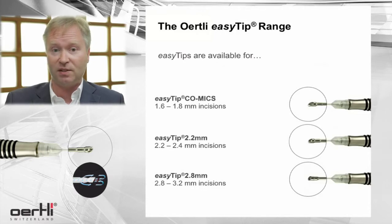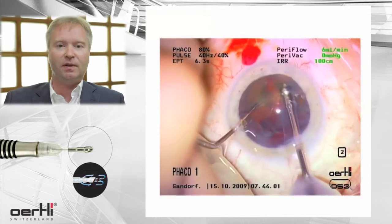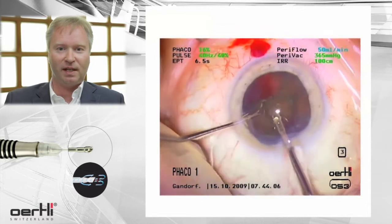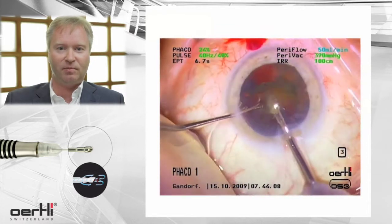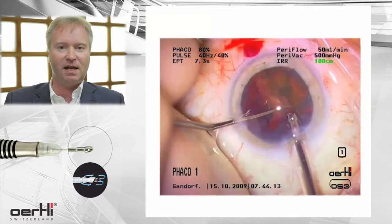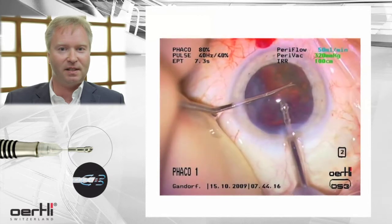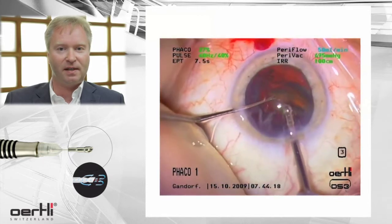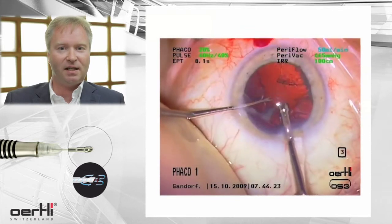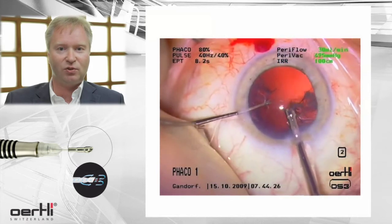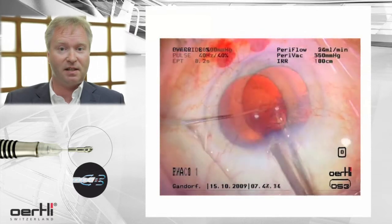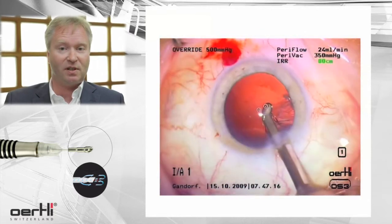On this video you can see how the fragments are magnetically held and locked to the tip of the EasyFaco tip. You can also see how the energy coupling is optimized. The high followability creates a cone of fluid movement to the aspiration funnel, the energy coupling is perfect, and the nuclear fragments are emulsified.